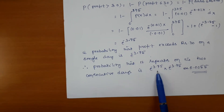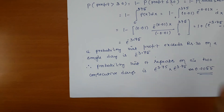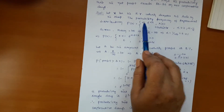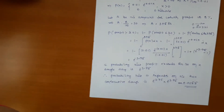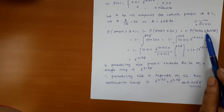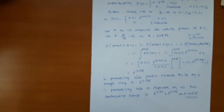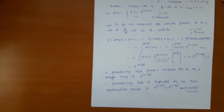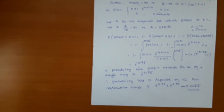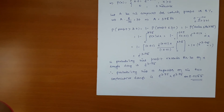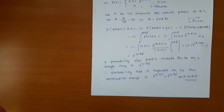For two consecutive days, we multiply the single-day probability by itself, giving approximately 0.0055. The key point in this problem is that the probability function is defined in terms of sales, but the question asks about profit. You must first convert profit to the equivalent sales amount before substituting into the probability function. This type of application problem also appears in management and business studies courses.